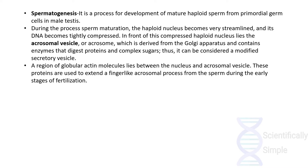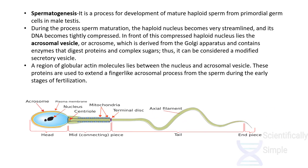As we can see, the structure of the sperm includes a head, a mid connecting piece, and a tail. The acrosome surrounds the nucleus, which is followed by a centriole and mitochondria that provide energy for the movement of the axial filament, or tail.